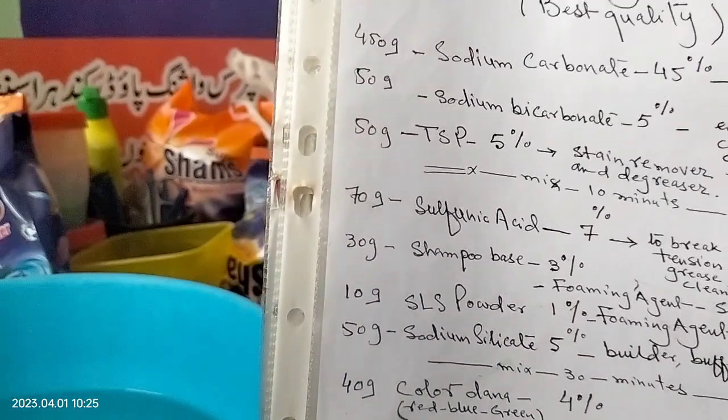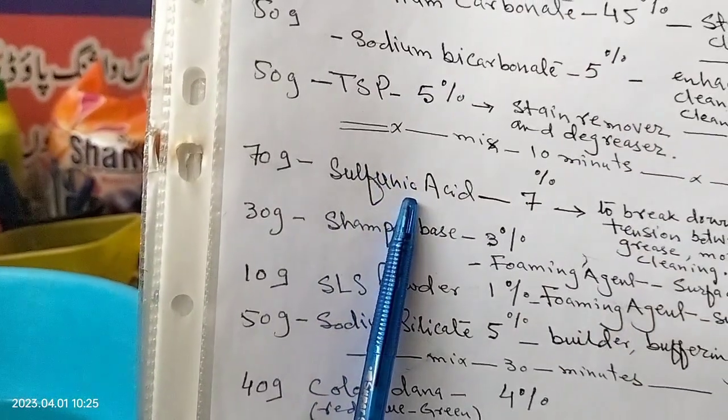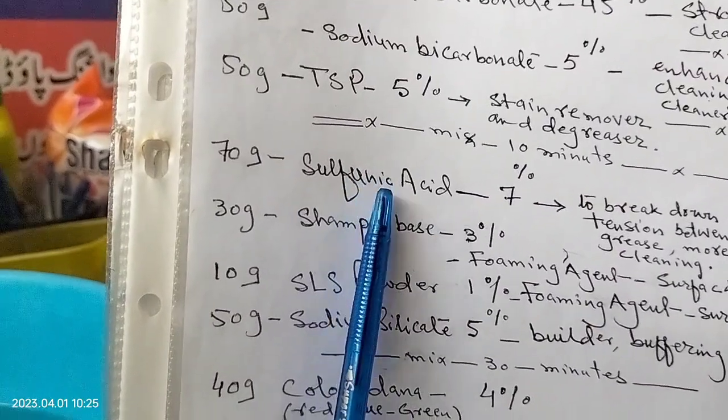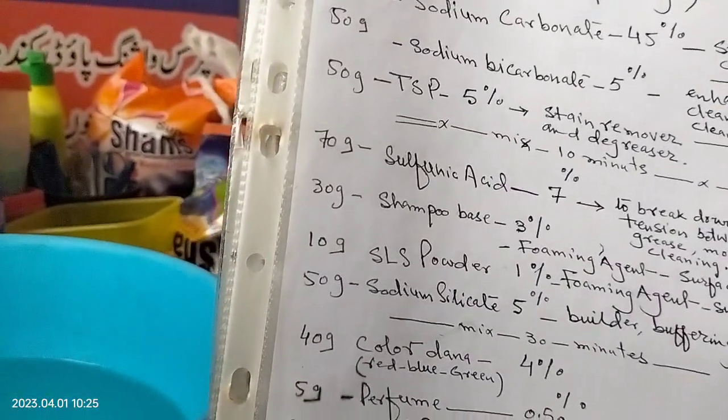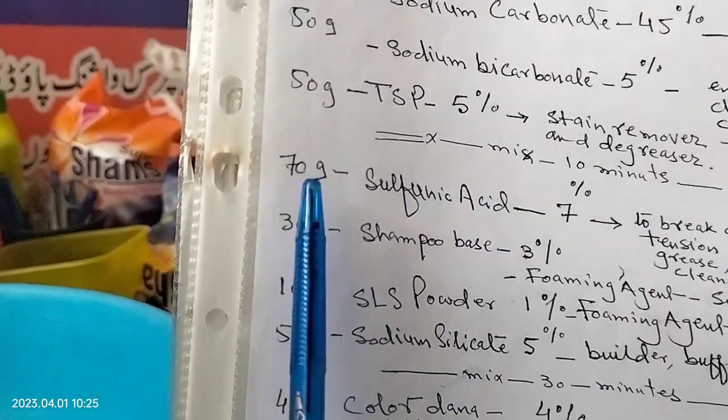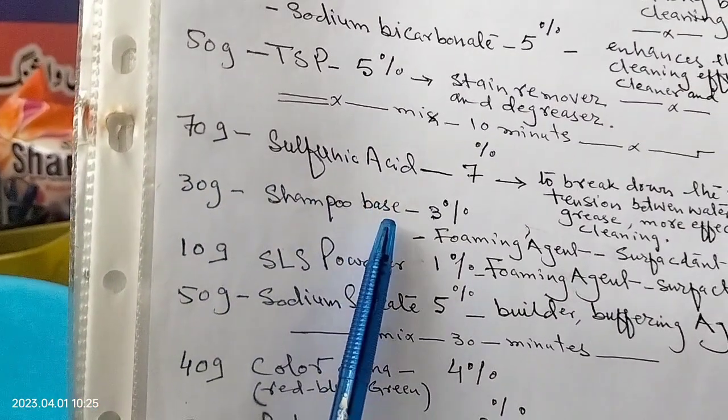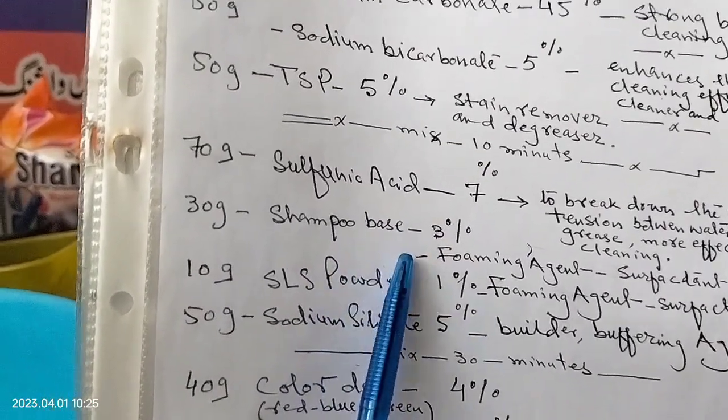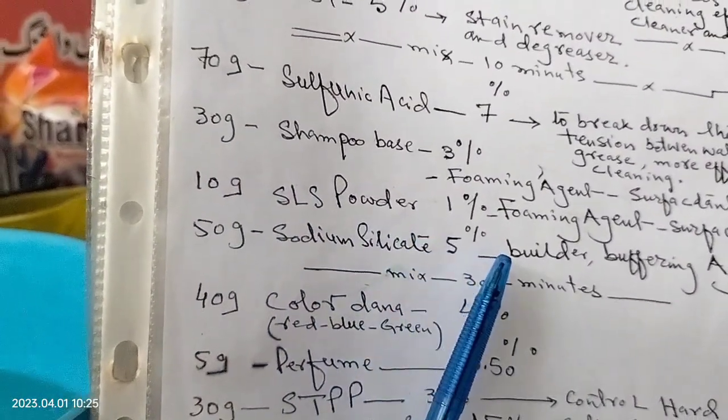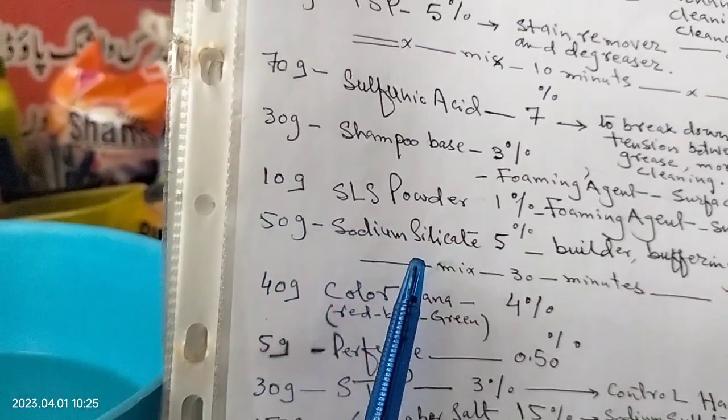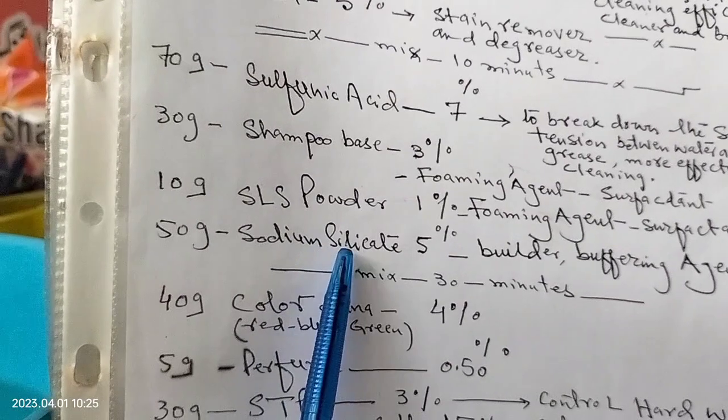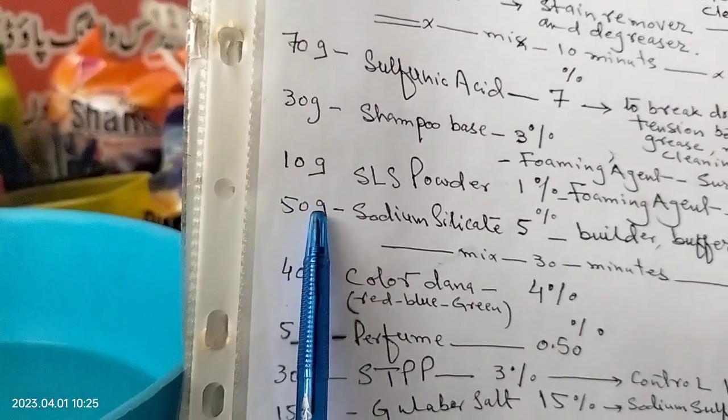After that, in other bowl, we add sulfonic acid 7%, strong acid, strong react with base, cleaning agent, foaming agent, 70 grams. Shampoo base 3%, this is foaming agent, this is a surfactant, 30 grams. Sodium silicate 5%, it is a builder, buffering agent, 50 grams.